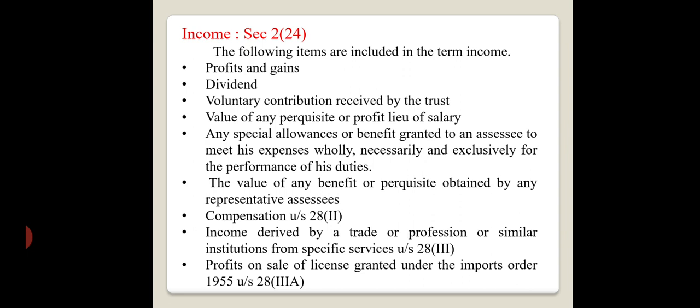The value of any benefit or perquisite obtained by any representative of assessees is income. Compensation, whatever compensation is to be received, is income. Income derived by a trade or profession or similar institutions from specific services is also income. If you are providing some services and generating any income or money from those services, that should be called income.